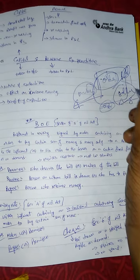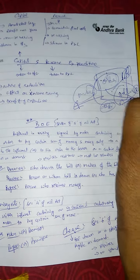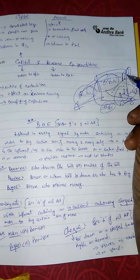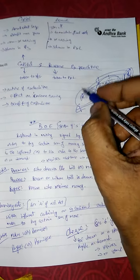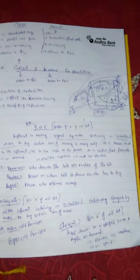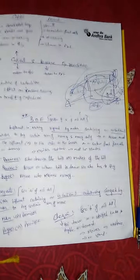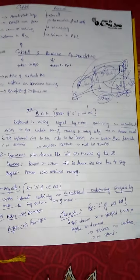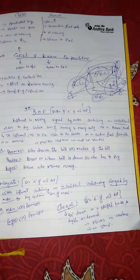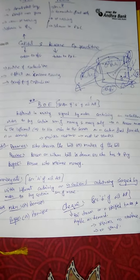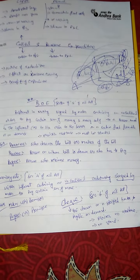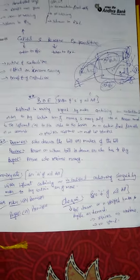That is, when A endorses this bill to C, C is the person eligible to receive the payment. Bill of exchange is an unconditional order prepared by A (seller) and signed by him, ordering B to make the payment either to A or on his order to C — a payment of a specified amount on a specified date or after a specified period of time.